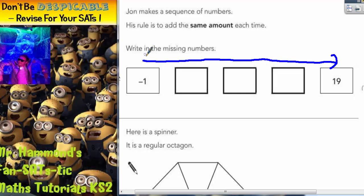So what's the big gap from minus 1 to 19? Well, we can use 0 to help because we know that the gap from minus 1 to 0 is 1, and the gap from 0 up to 19 is 19.